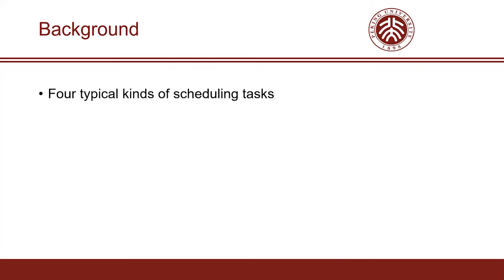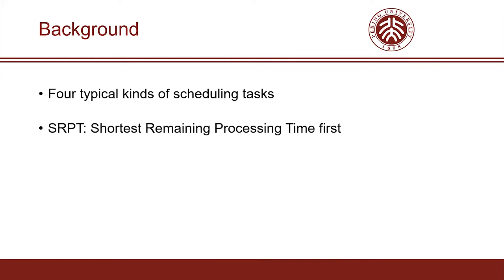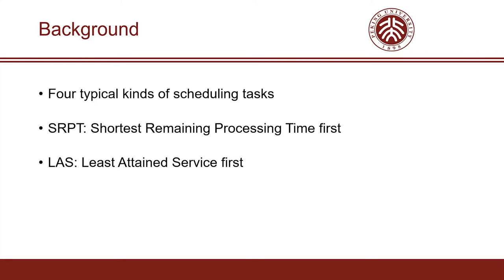There are four classical kinds of flow scheduling tasks. When only pursuing the optimal flow completion time, FCT in short, the optimal scheme is shortest remaining processing time first, SRPT in short. SRPT follows a simple rule: the flow with the shortest remaining bytes goes first. However, in most cases, switches cannot obtain the remaining bytes because prevalent network protocols such as TCP and UDP do not support it. Therefore, least attained service first, LAS in short, is proposed. LAS lets the flow with the smallest bytes sent go first so as to approximate SRPT.